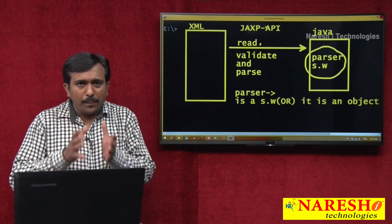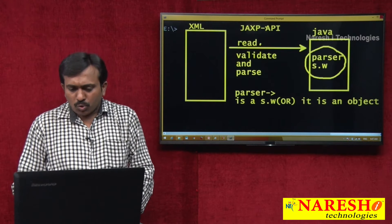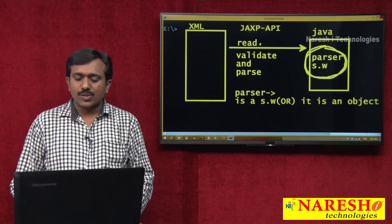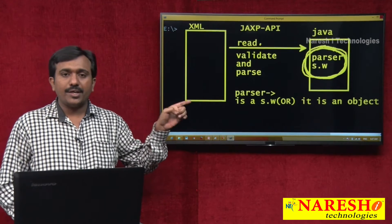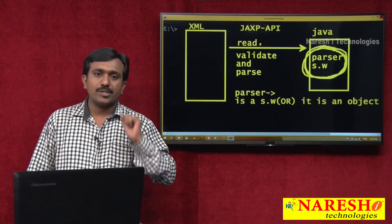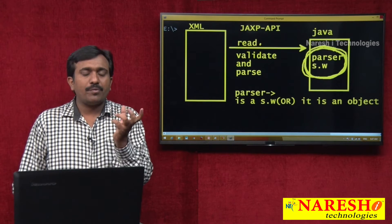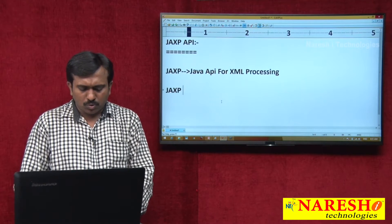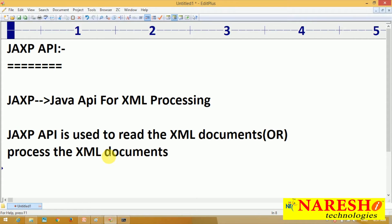The JAXP API provides some classes and interfaces. Those are used to create the parser software. So, JAXP API provides the classes and interfaces to create parser software in a Java program. That parser software is used to read, validate, and parse the XML documents. Simply, you can say JAXP API is used to read or process the XML documents.